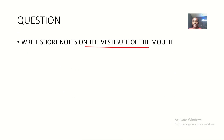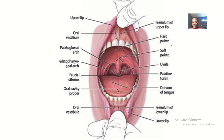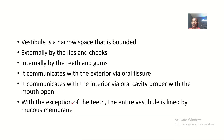The question is: write short notes on the vestibule of the mouth — the anatomy of the vestibule of the mouth. This is the whole mouth, but coming down here, you can see the oral vestibule, or the vestibule of the mouth.